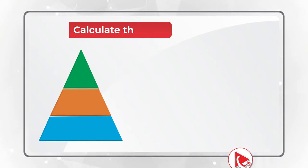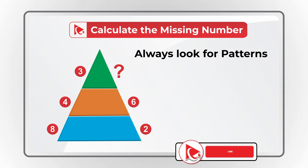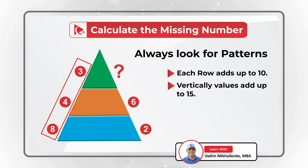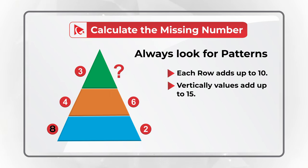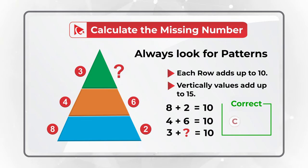The fundamentals are solid — you need to always look for patterns in these types of questions. And there are actually two patterns here. The first pattern is that each row adds up to 10, and vertically values add up to 15. For example, 8 plus 2 equals 10, 4 plus 6 equals 10, and 3 plus the missing number also equals 10. So the correct answer here is Choice C, 7.